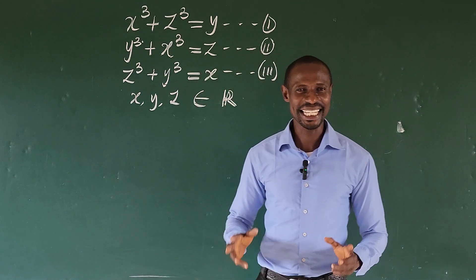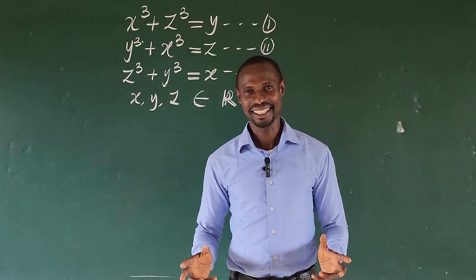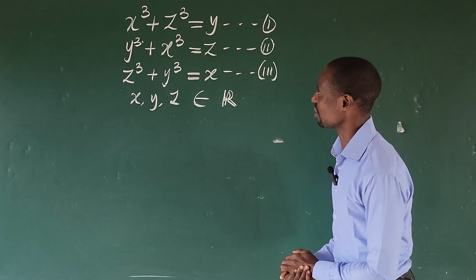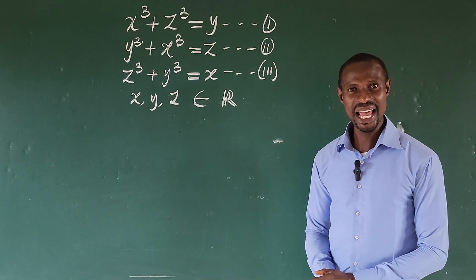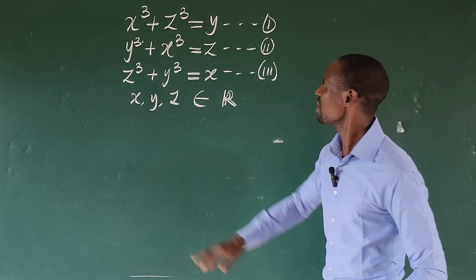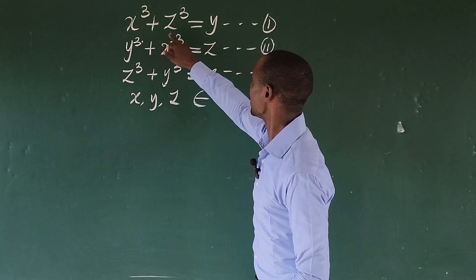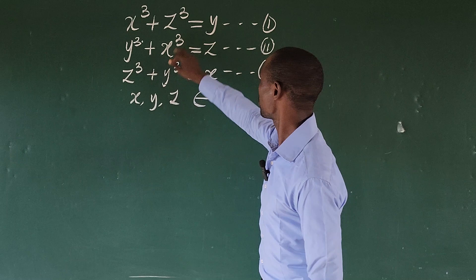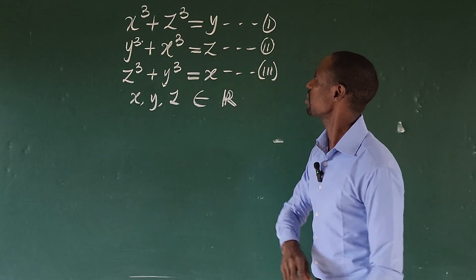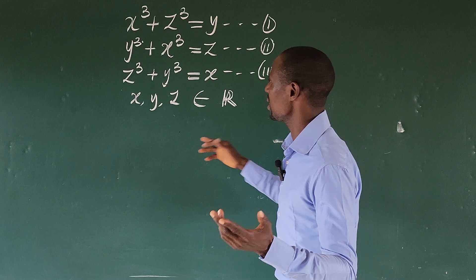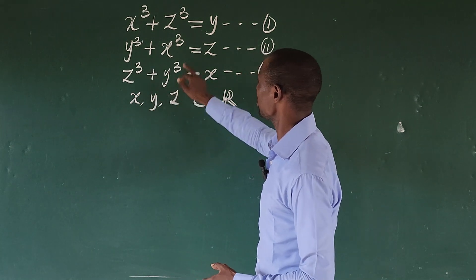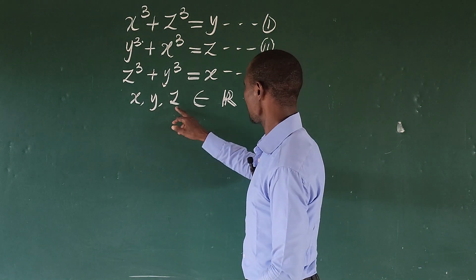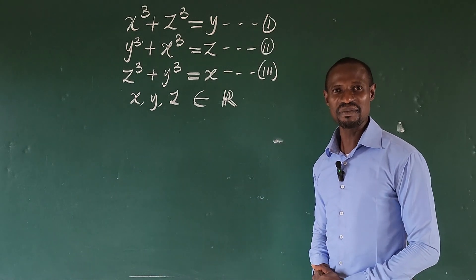Hello everyone, welcome to today's class. Here we have another math challenge where we learn some tips and tricks in mathematics. We have three equations: equation one is x³ + z³ = y, equation two is y³ + x³ = z, and equation three is z³ + y³ = x. We are given the condition that x, y, z belong to the set of real numbers.